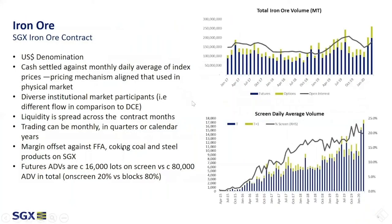Let's start from iron ore. I would like to outline the main specifics and contract specifications for iron ore listed on SGX. SGX's contract is US dollar denominated and cash settled against the monthly average, daily average of index prices. It's important to mention that this is the pricing mechanism aligned with the physical market. We have quite a diverse institutional market — 99% of our volumes come from institutional and physical players, while on DCE over 90% of participation is retail flow. Liquidity is spread across contract months, and trading can be in monthly, quarterly, or calendar years.